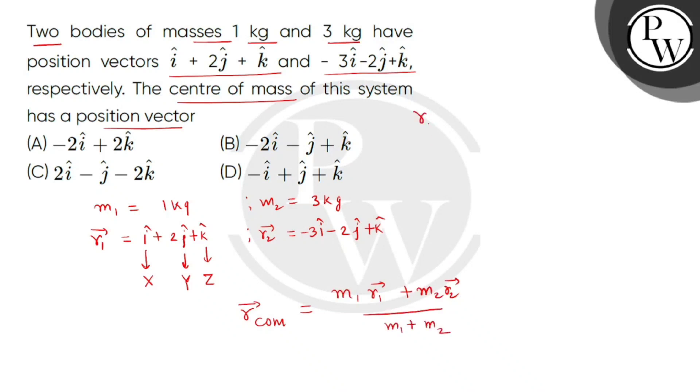Now putting values, the position vector of center of mass is m1 ki value 1 and r1 i cap plus 2j cap plus k cap plus m2 ki value 3 and r2 ki value minus 3i cap minus 2j cap plus k cap. And it's divided by total mass which is m1 plus 3, that is 4 kg.